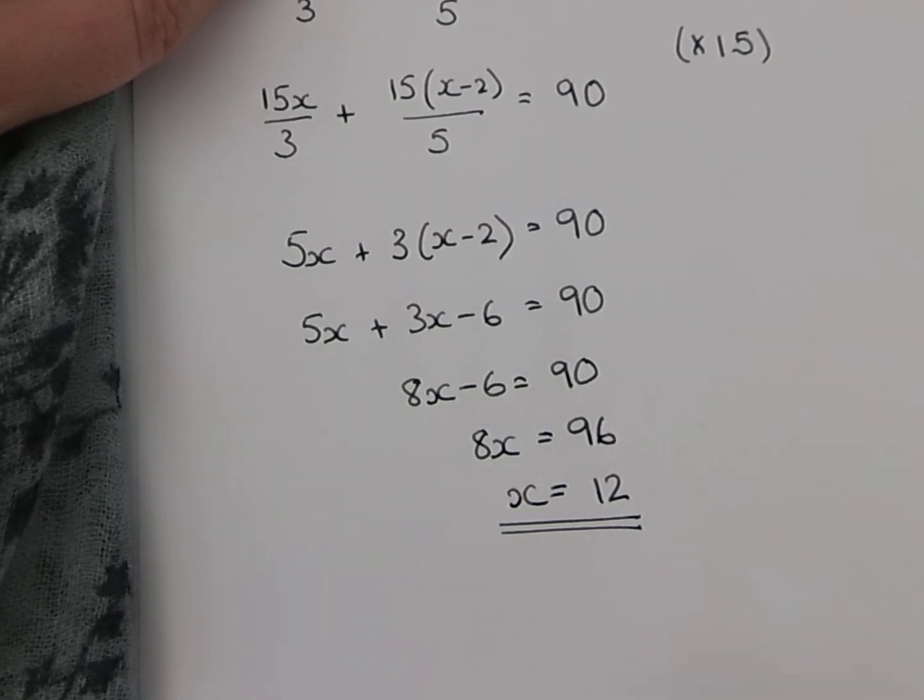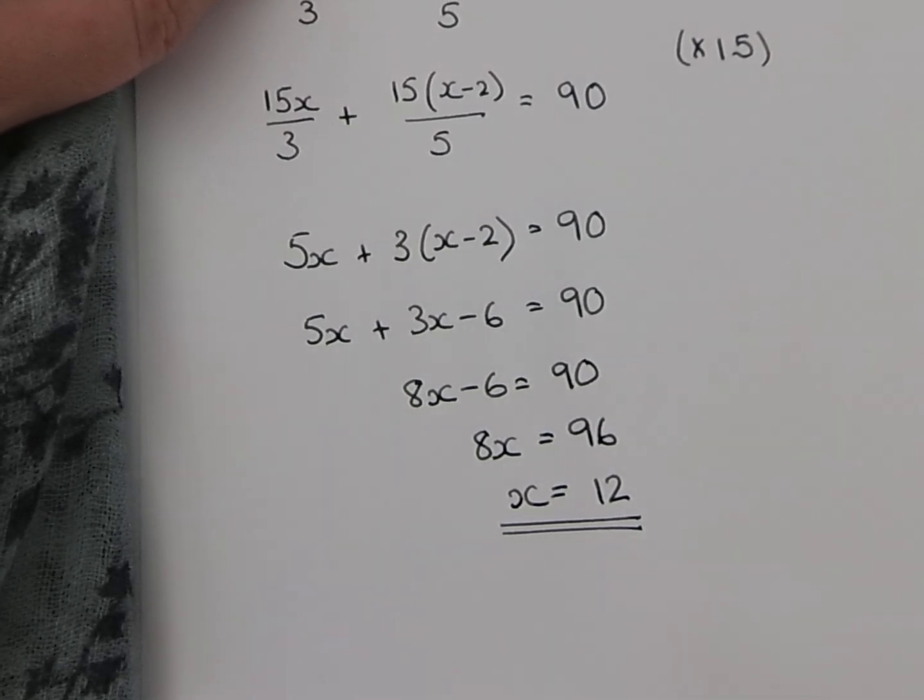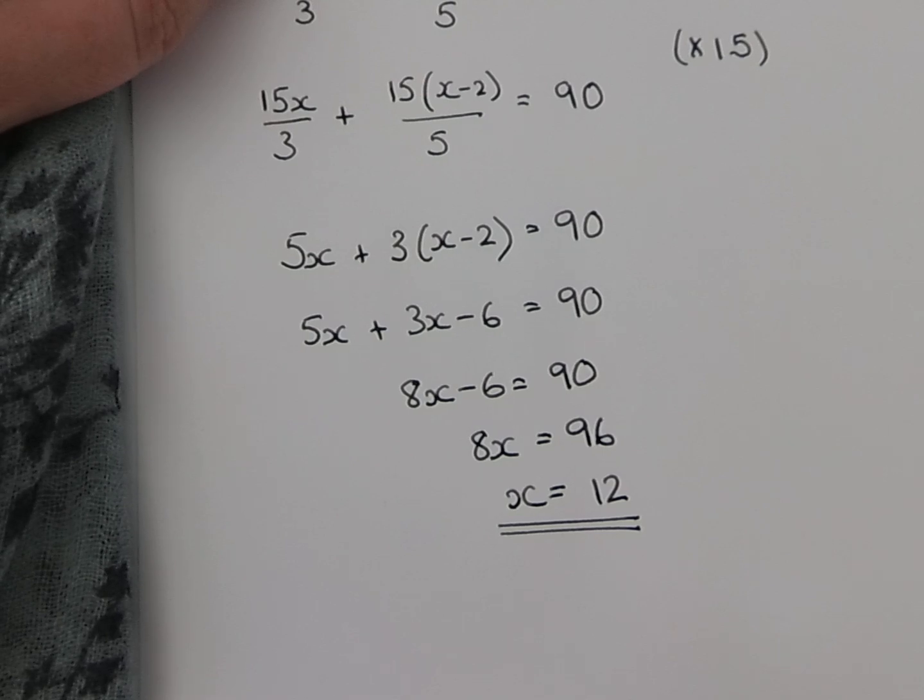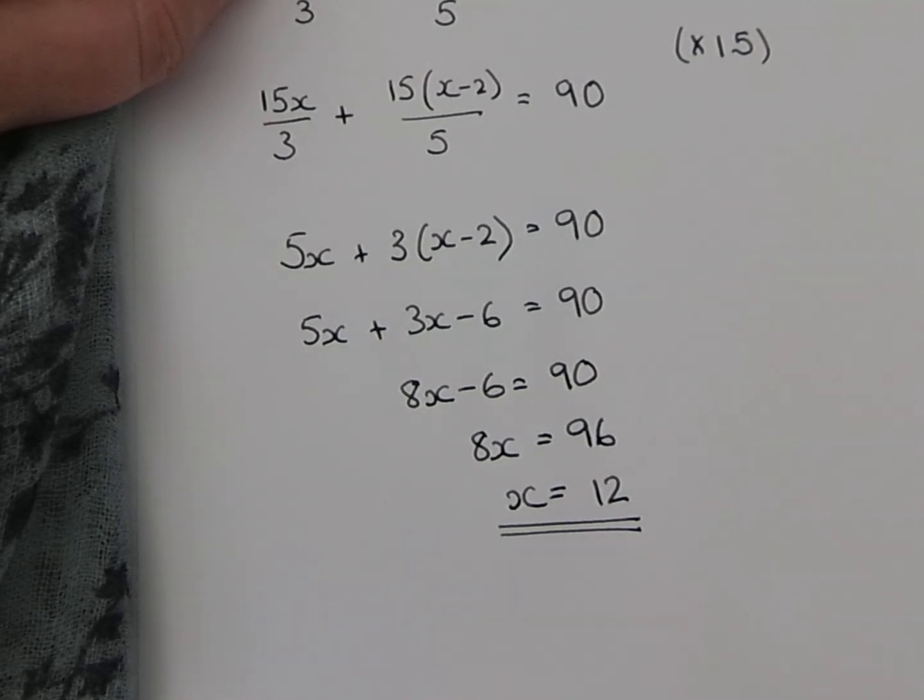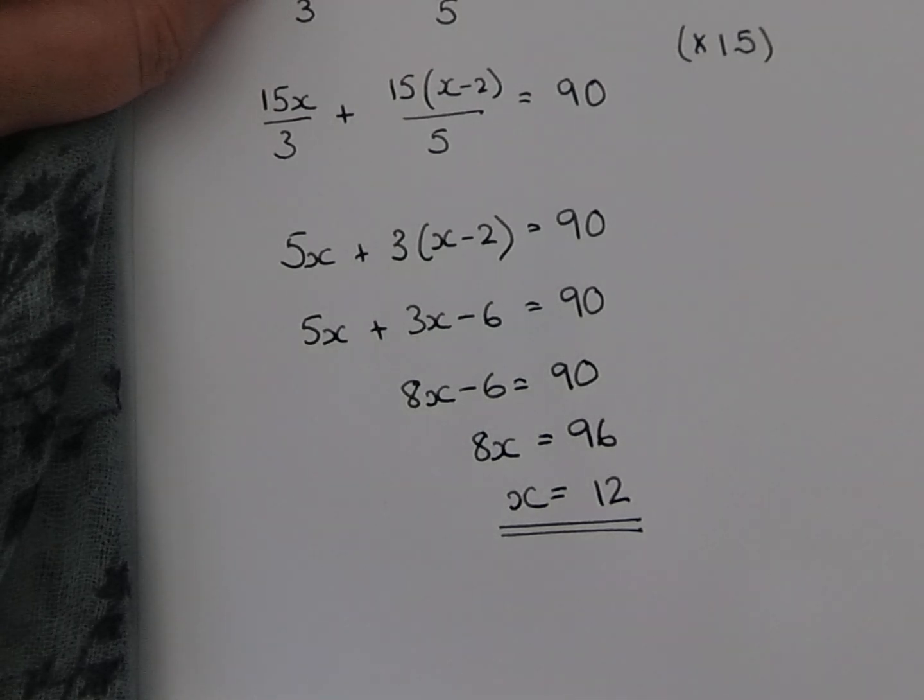So once you've chosen an appropriate amount to multiply by to get rid of, to clear those fractions, the answer comes out quite nicely. That's the first example with integer values as our denominators on the fractions.